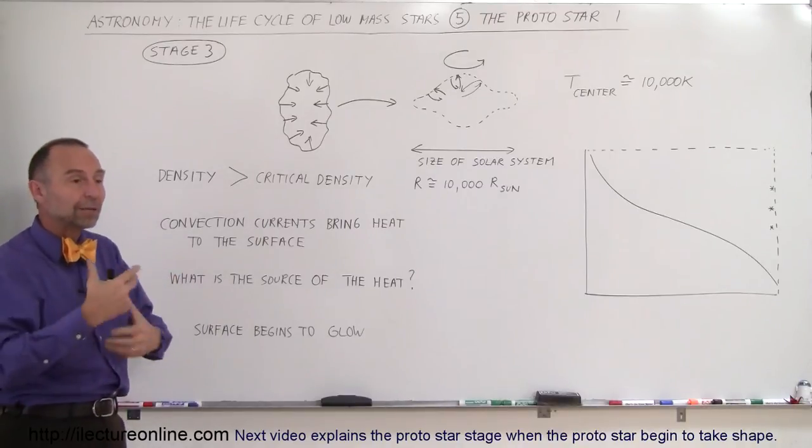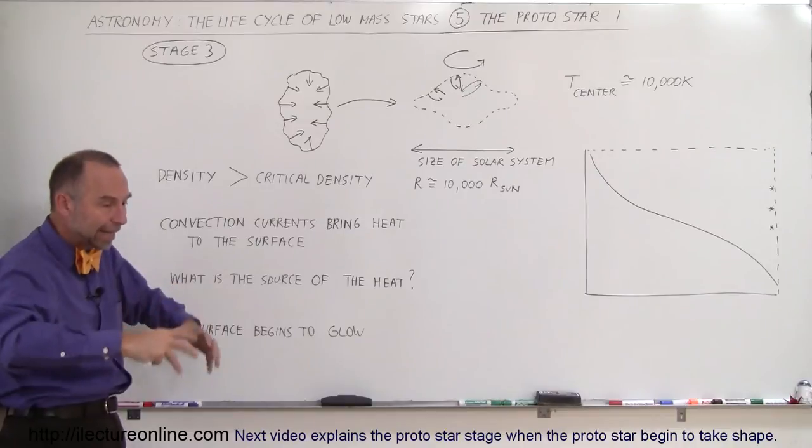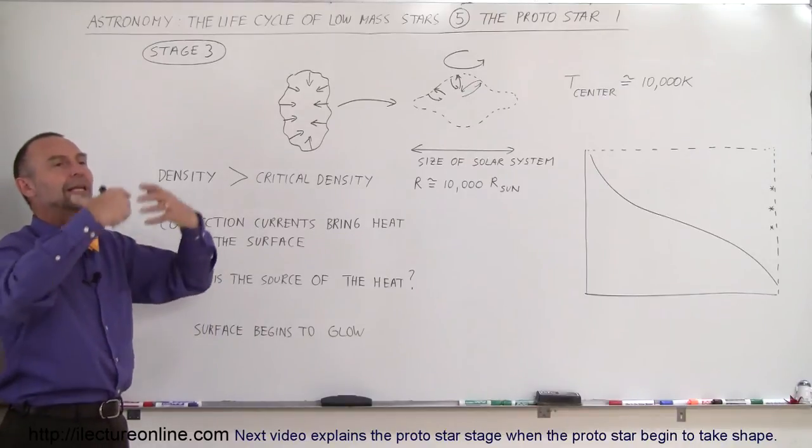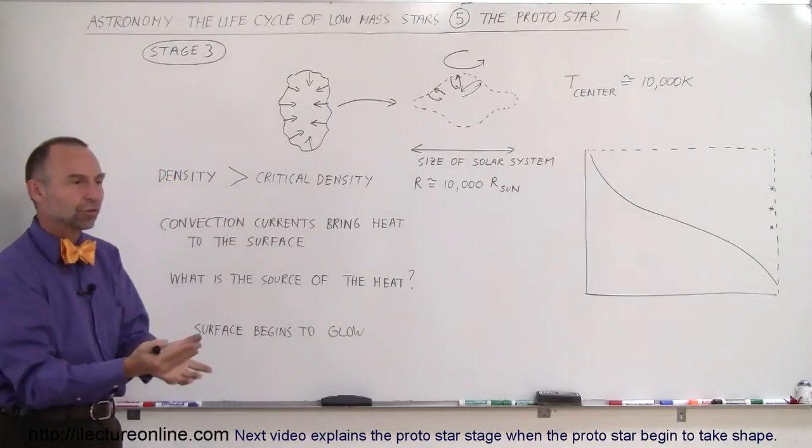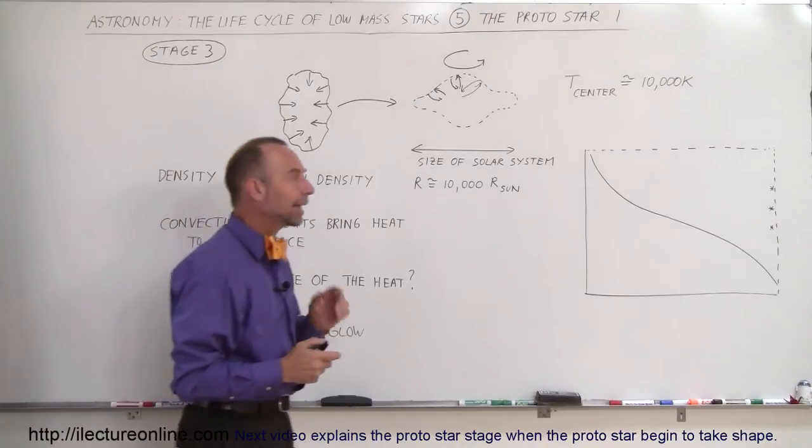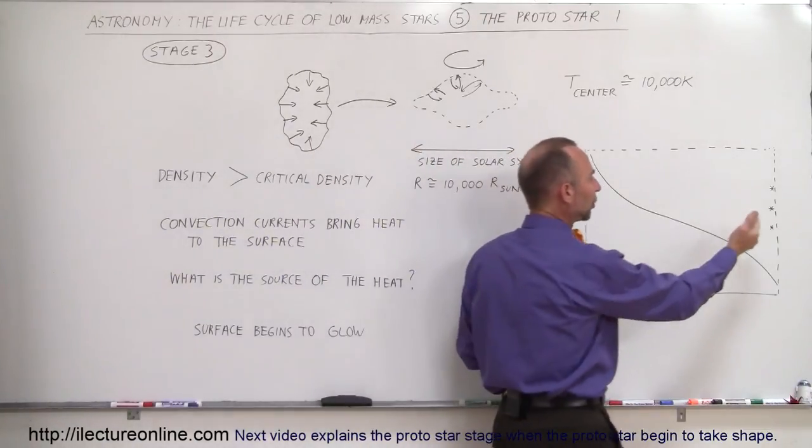That heat generates more commotion at the center, and you get convection currents bringing that heat to the surface and making the surface glow. At that point we have what we call a real protostar.